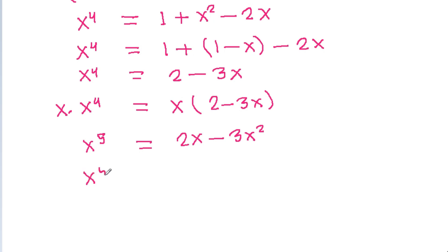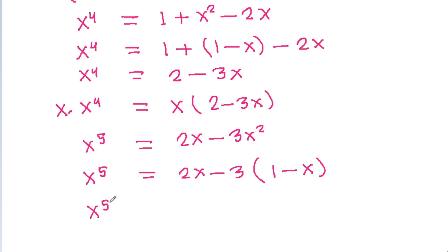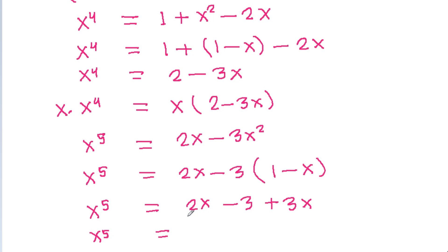And x power 5 is equal to 2x minus 3 times x squared, where x squared is 1 minus x. So x power 5 is equal to 2x minus 3(1 minus x), which gives x power 5 equal to 2x minus 3 plus 3x, that is 5x minus 3.